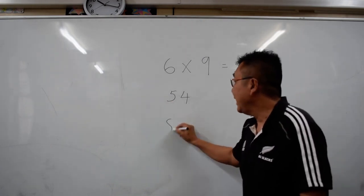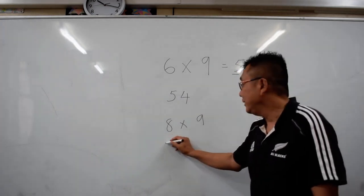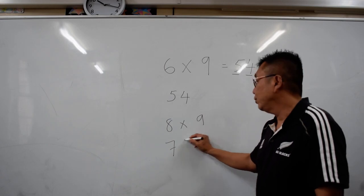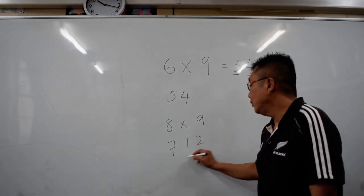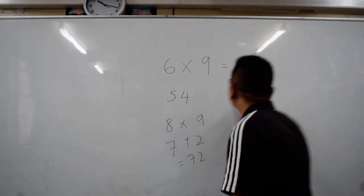The next one is 8 times 9. 1 digit that's less than 8 is going to be 7. And to make up to 9, you have to put a 2. So the answer is 72. That is straightforward. Next one.